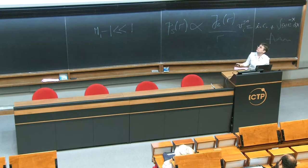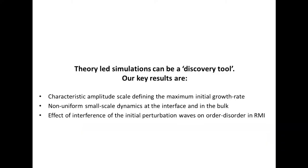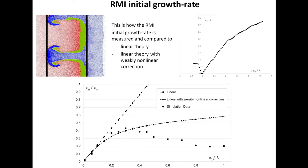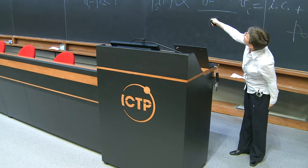We found non-equal-scale small-scale dynamics at the interface and in the bulk, implying scale coupling between interfacial and bulk dynamics. We also found a strong effect of wave interference of the initial perturbation waves on ordered and disordered Richtmeyer-Meshkov flows. We call this growth rate 'initial' because we measured it at the very initial moment of time, and we wish to distinguish between the initial growth rate and the linear growth rate.